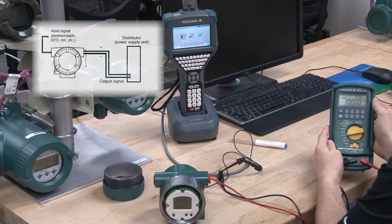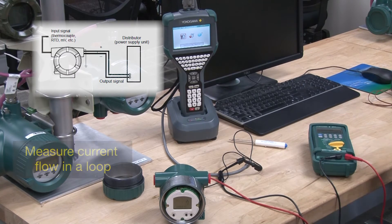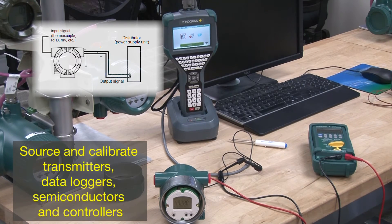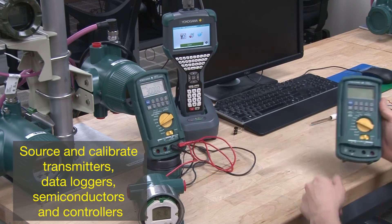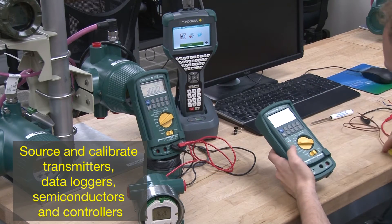This type of calibrator is commonly used to measure current flow in a loop or to source and calibrate devices like transmitters, data loggers, semiconductors, and controllers.